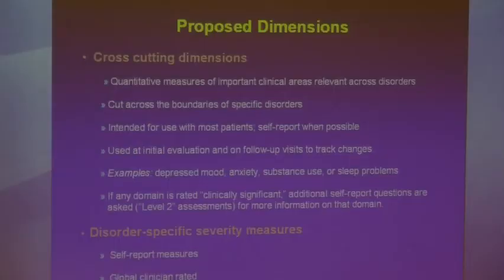Because we all know a disorder isn't just absent or present, and DSM so far has been very categorical — you have it or you don't. But we know there's a spectrum of severity, and many of us use measures anyway in our clinical practice. The idea is to add some disorder-specific severity measures and a simple global clinician-rated severity measure as well, to track change over time as patients go from severe to mild to subclinical symptoms.